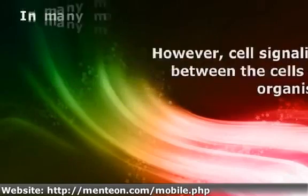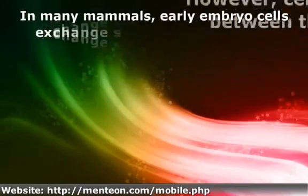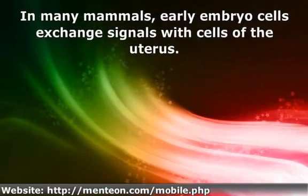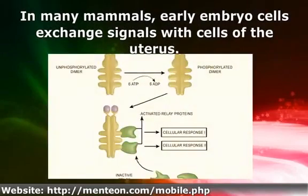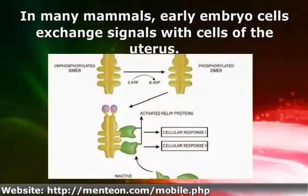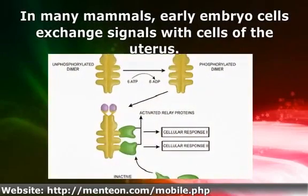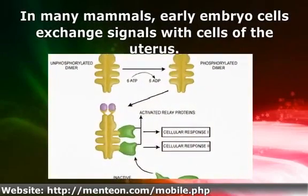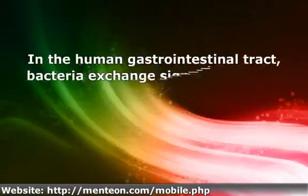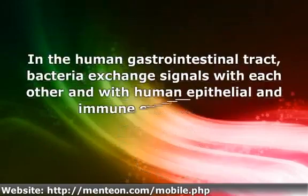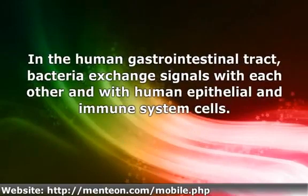In many mammals, early embryo cells exchange signals with cells of the uterus. In the human gastrointestinal tract, bacteria exchange signals with each other and with human epithelial and immune system cells.